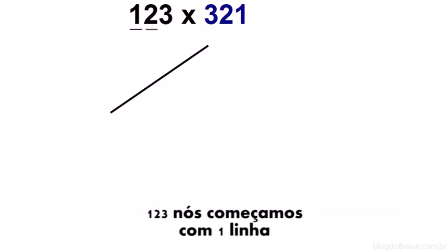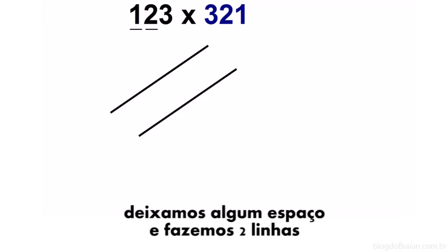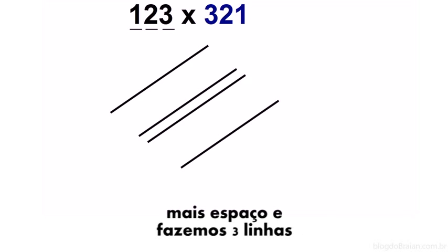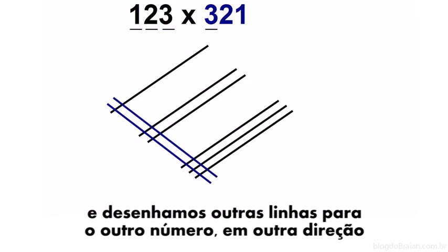We can even do this for bigger numbers. 123, we start out with one line, then with some space two lines, with some more space three lines. And we draw the other lines for the other number in the other direction.